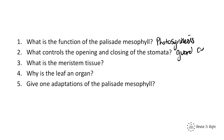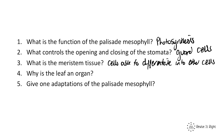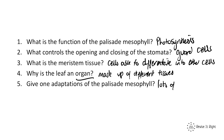Question three: what is the meristem tissue? That's the region in the growing tips of shoots and roots where cells are able to differentiate into other plant cells. Question four: why is the leaf an organ? Because an organ is made up of lots of different tissues. Question five: one adaptation of the palisade mesophyll — they contain lots of chloroplasts.